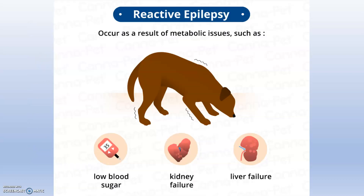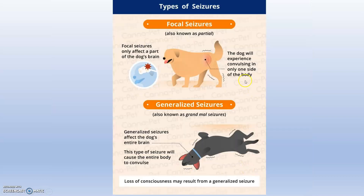Reactive epilepsy is a result of metabolic issues such as low blood sugar, kidney failure, or liver failure. If any of these conditions are present in the dog, it may lead to reactive epilepsy — the seizure is essentially a reaction to those underlying conditions.